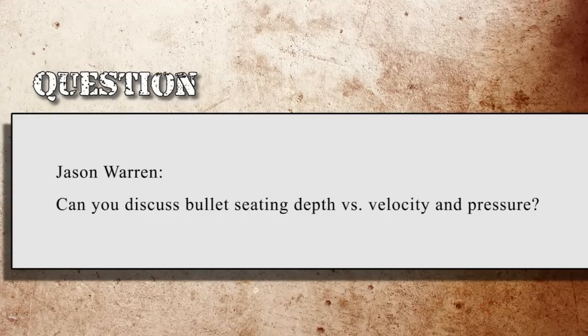Jason Warren asks about bullet seating depth versus velocity and pressure. You'll see a lot more pressure with the bullet jammed into the lands than backed off into the case. However, I don't test much of that — for precision rifle games, I load to magazine length because we need a repeater. There's little point in gaining incremental accuracy with the bullet touching the lands if the cartridge no longer fits in the magazine. I load to magazine length and tune other factors like charge weight to find best accuracy.